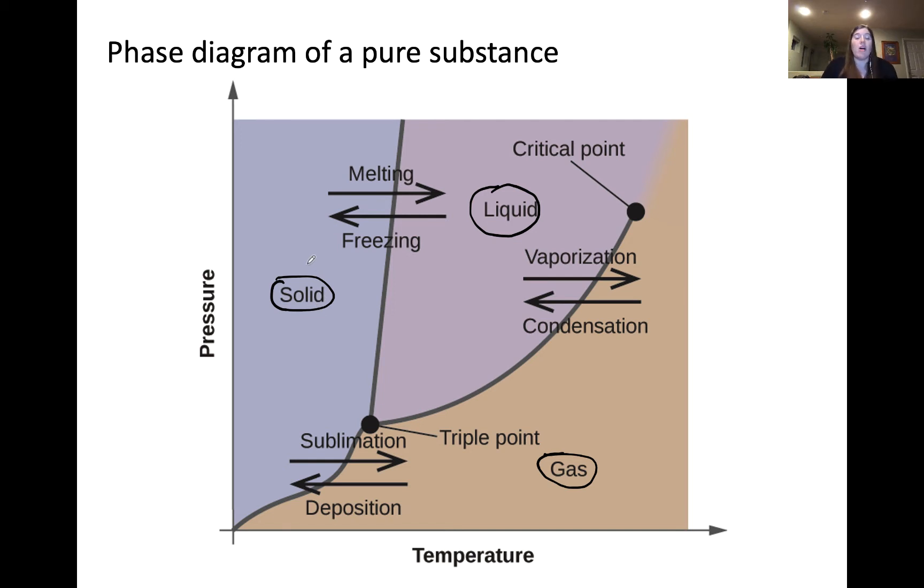The next key feature are these lines separating the phases. For example, the solid-liquid line is the pressures and temperature values for which the solid and liquid phases are in equilibrium. Going from solid to liquid, meaning increasing the temperature across this line is referred to as melting, whereas going from liquid to solid is referred to as freezing. For both of these phase changes, the liquid and solid are in equilibrium.